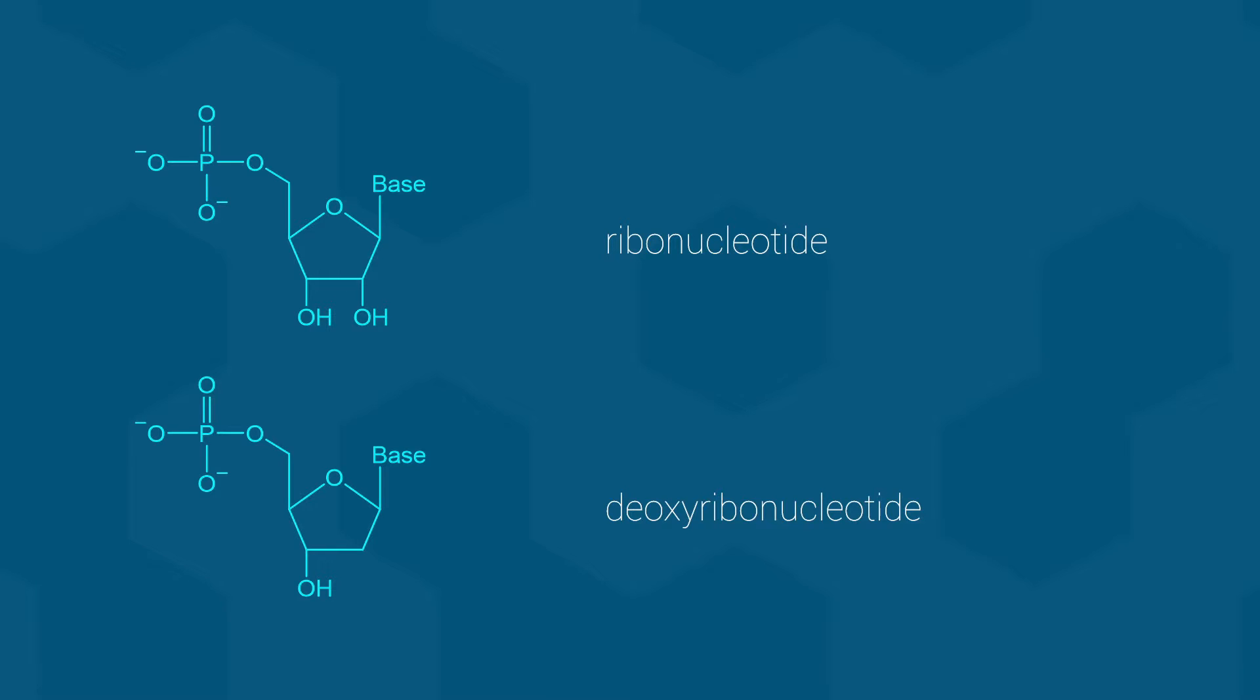Ribonucleotides are the monomers used to build ribonucleic acids, better known as RNA. On the other hand, deoxyribonucleotides are used to form RNA's much more famous sibling, deoxyribonucleic acid, better known as DNA.